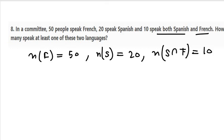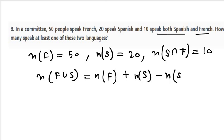Now we need to find how many speak at least one of these two languages. N(F∪S) equals N(F) plus N(S) take away N(S∩F). So we have 50 plus 20 take away 10. 70 minus 10 is 60.